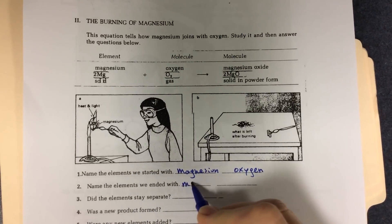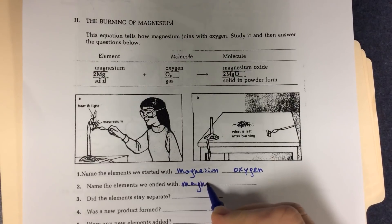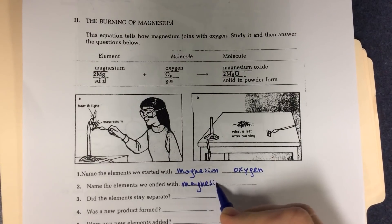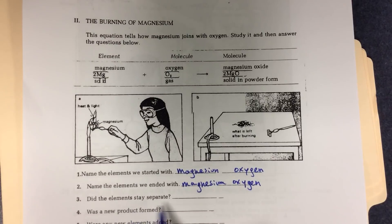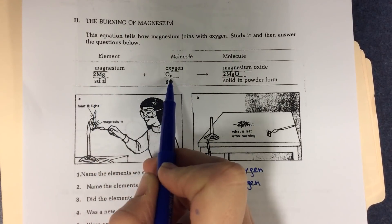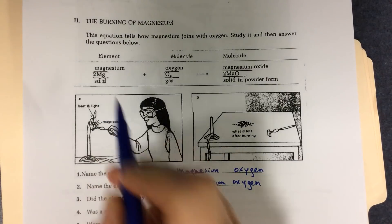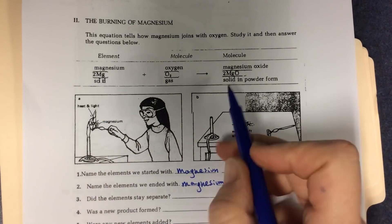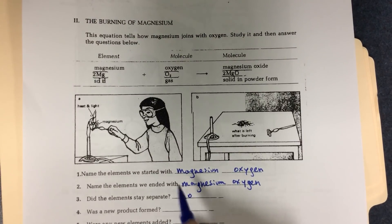Name the element we ended with: magnesium and oxygen. Did the elements stay separate? We can see that there are molecules of oxygen and molecules of magnesium. In the end, they combine, so no, they did not stay separate. Was a new product formed? Yes — magnesium oxide.